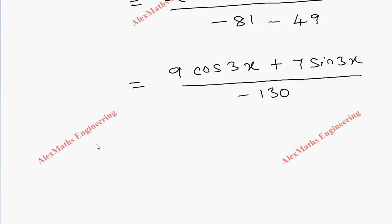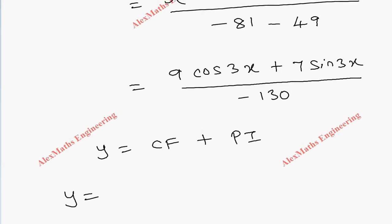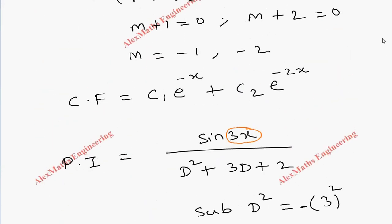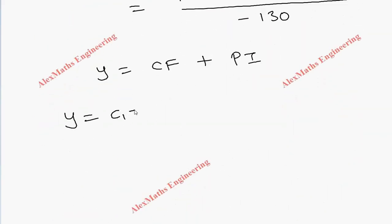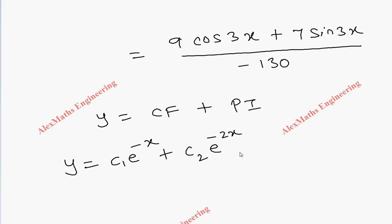Totally, our complete solution y is CF + PI. So y = C₁e^(-x) + C₂e^(-2x) - 1/130[9cos(3x) + 7sin(3x)].